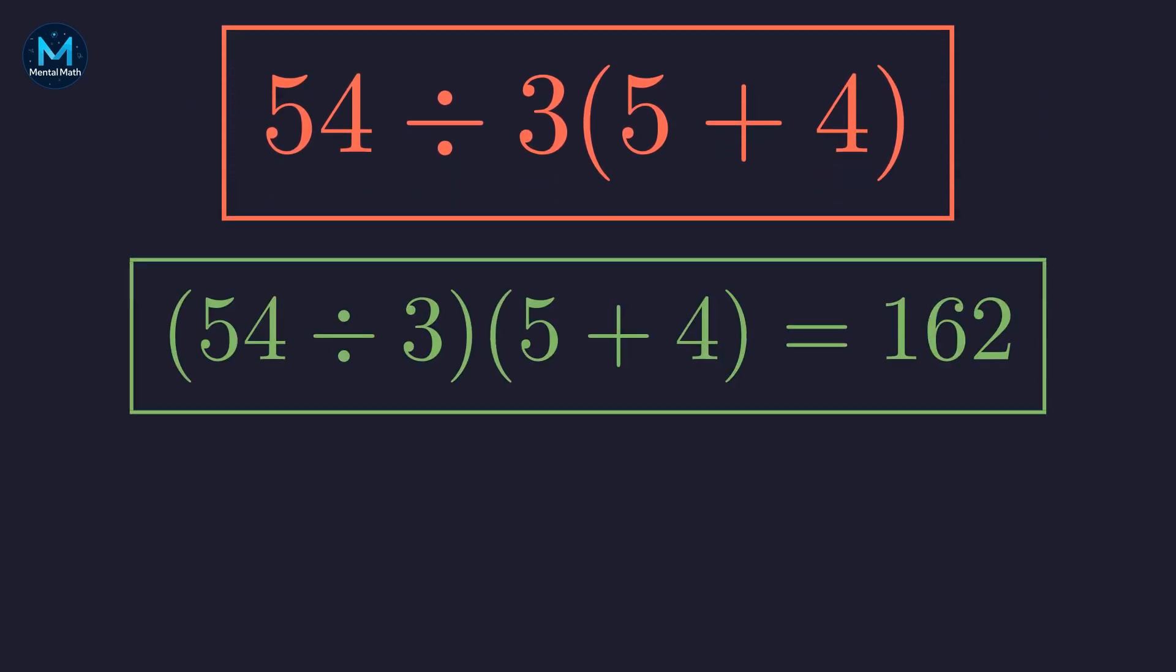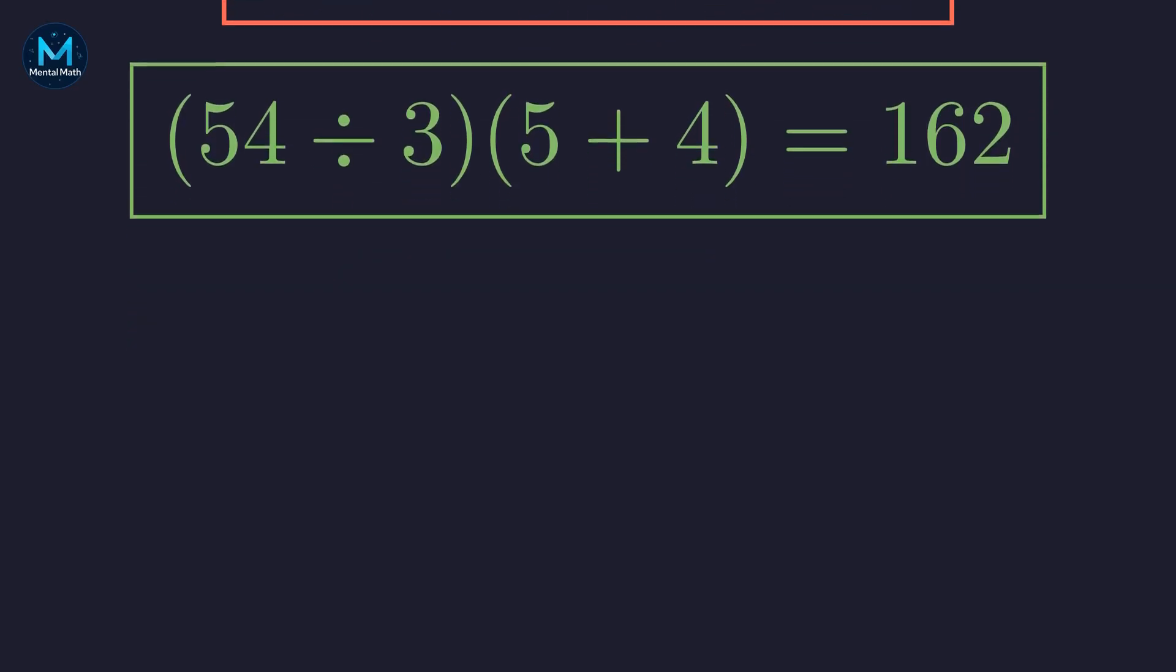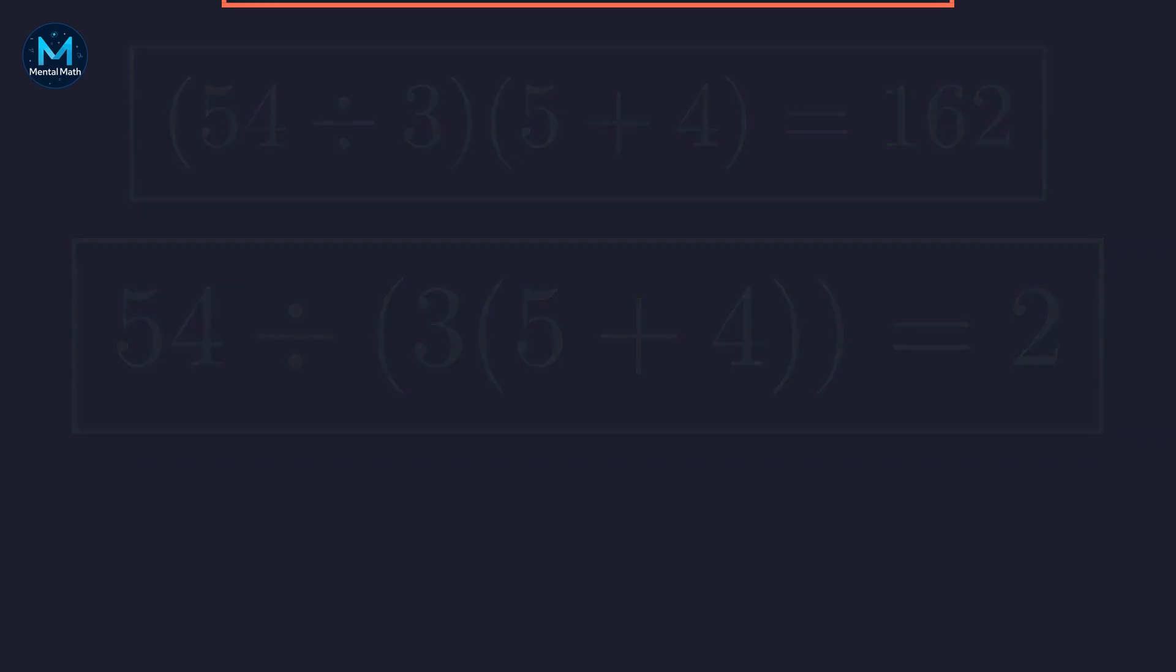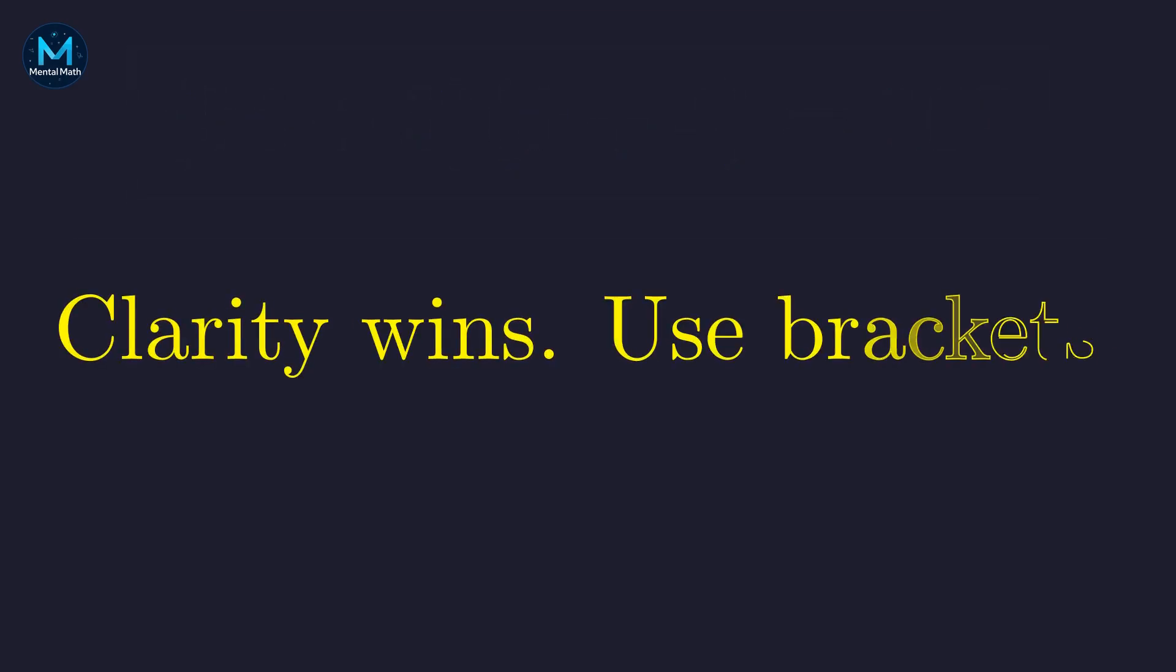Use this notation if you want the modern interpretation to be unambiguous. Use this if you mean the implied multiplication should happen first. The takeaway? When you're writing math, be explicit. Parentheses are your friend.